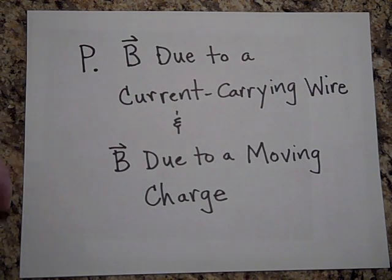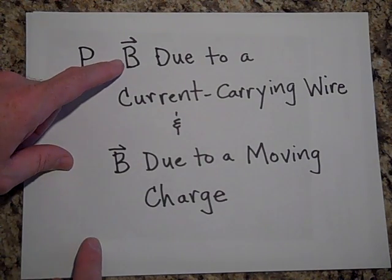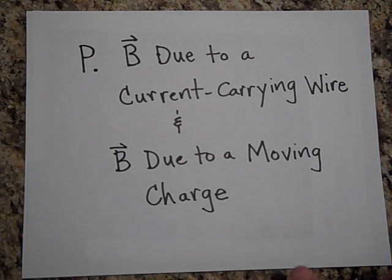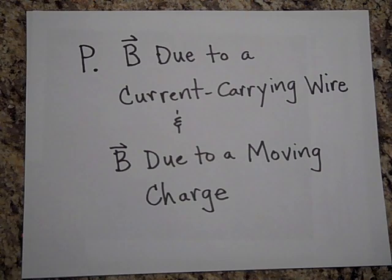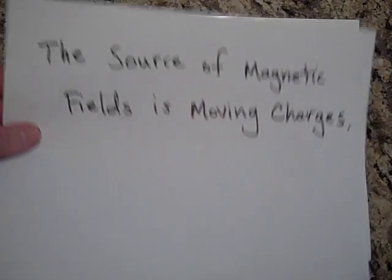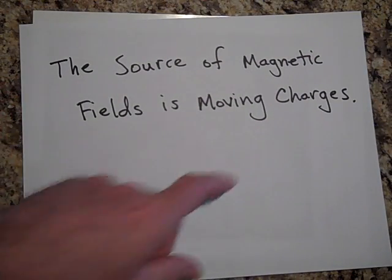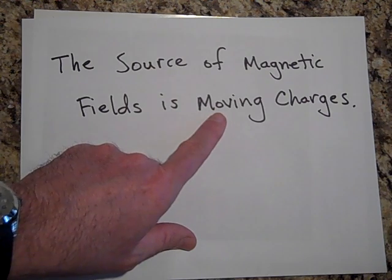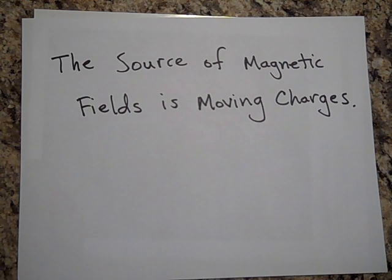In this video I'm going to talk about how magnetic fields are caused by current-carrying wires and by moving charges. Last unit we were only concerned with how charges moving through an external magnetic field get pushed, but what causes the fields in the first place? We know charges cause electric fields, but the source of magnetic fields is moving charges. Whether or not something is moving is relative, so magnetic field strength must be relative to your frame of reference.